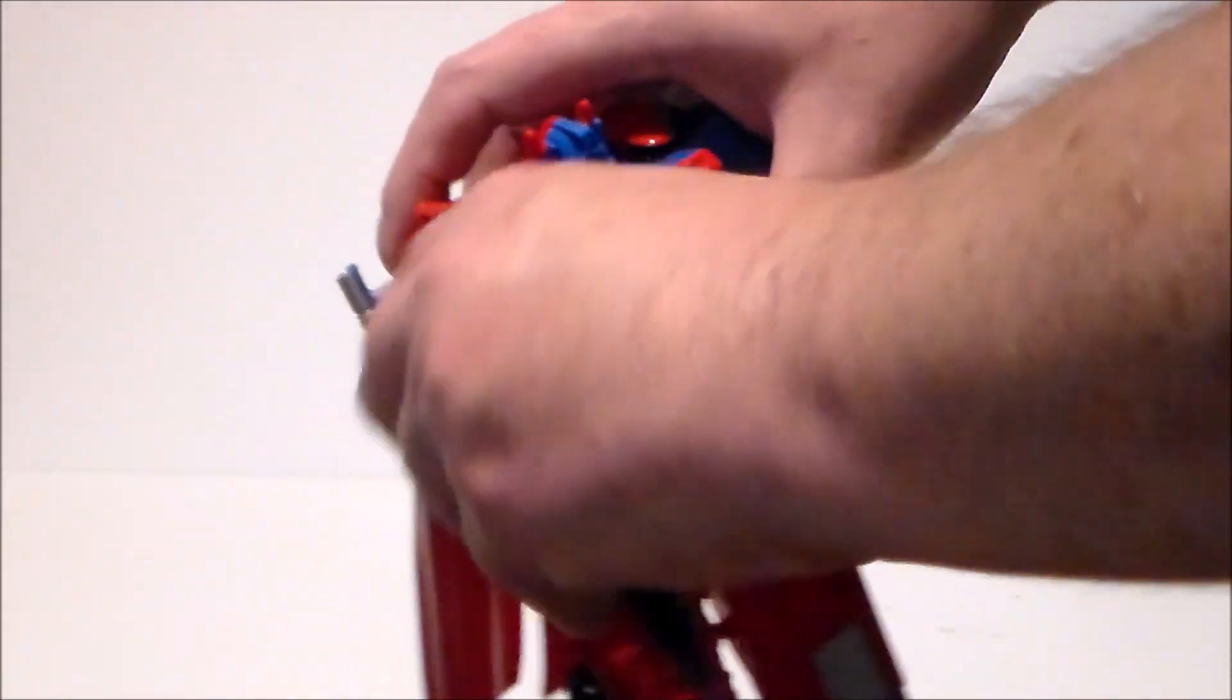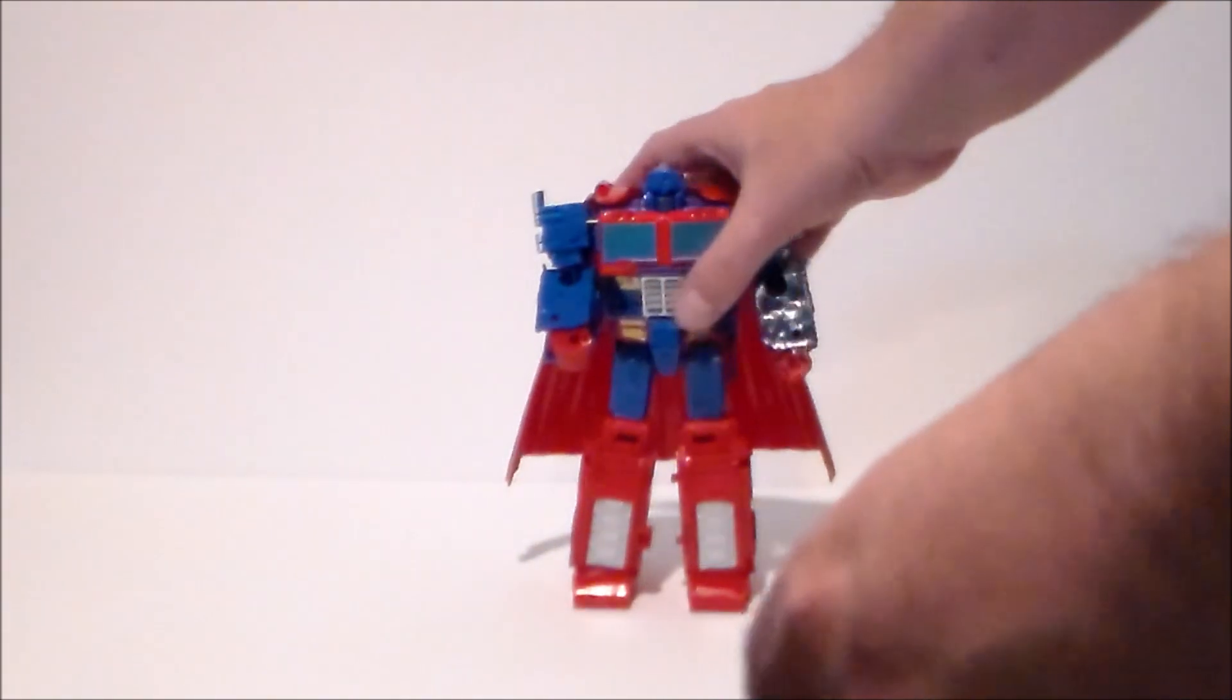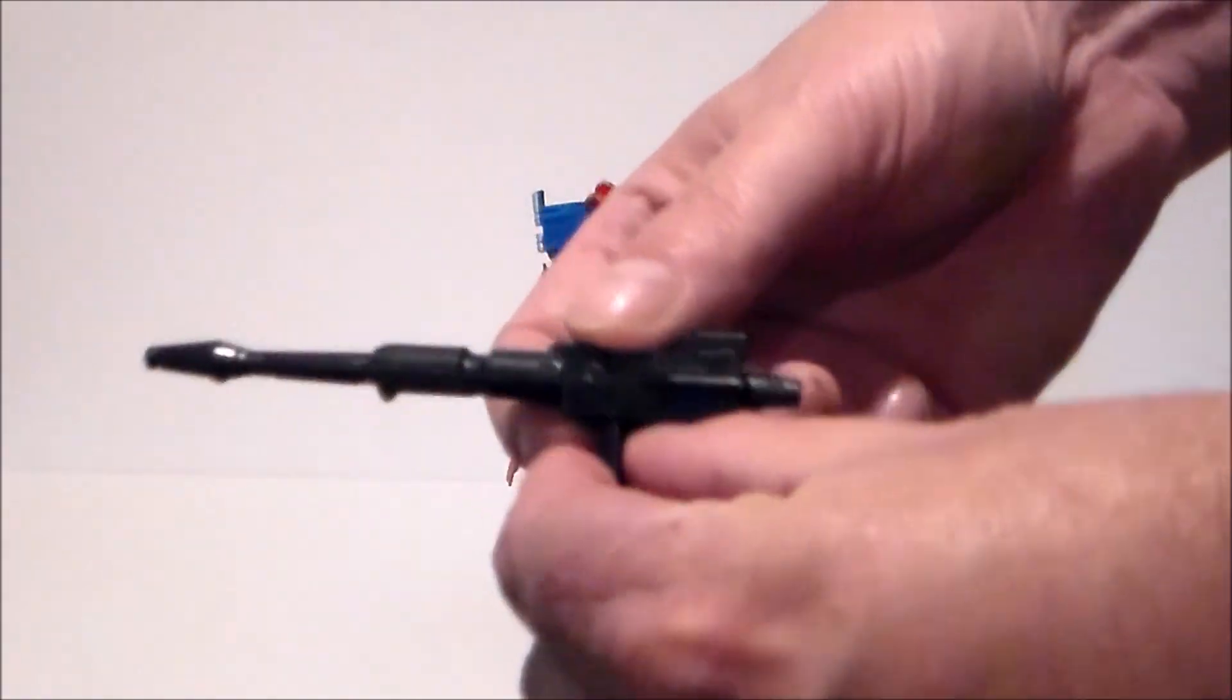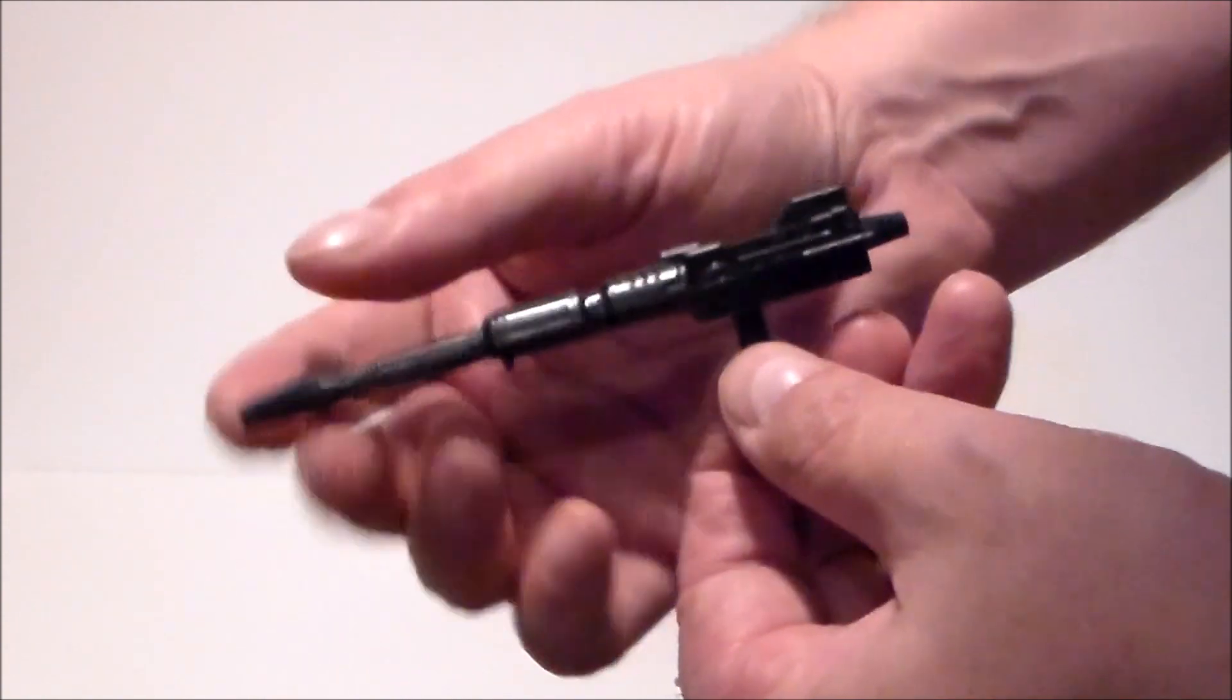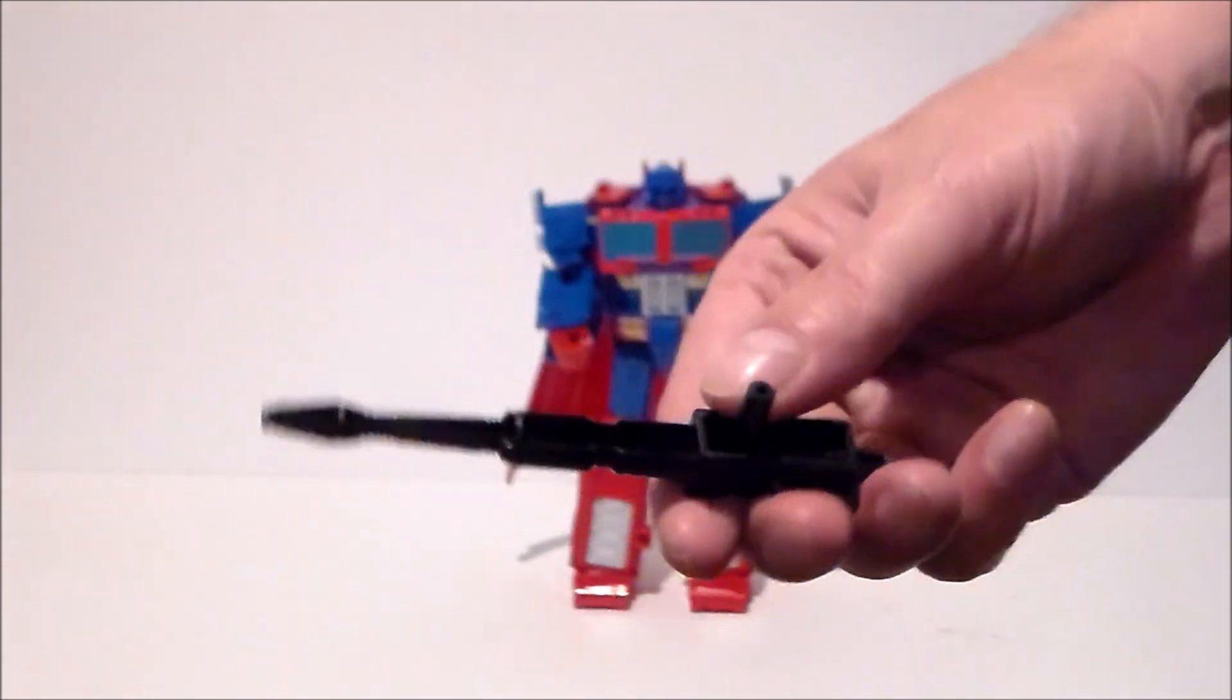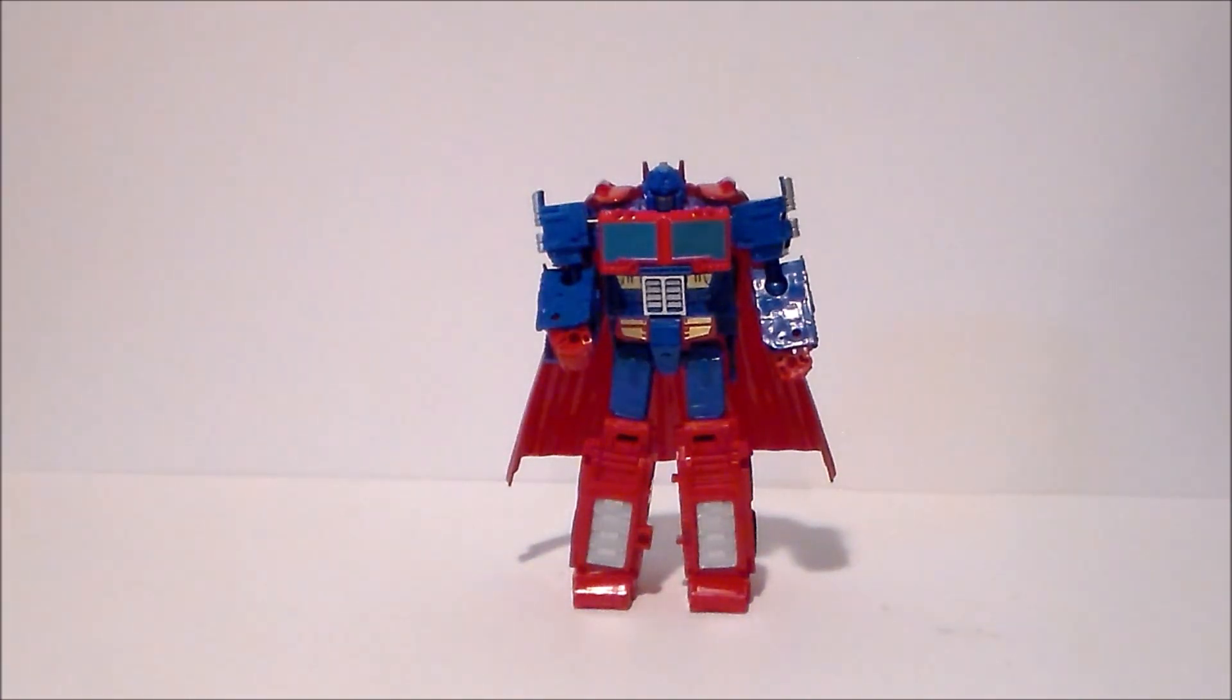He's got this little tiny blaster, very different for Optimus Prime, that's for sure. Just kind of take a closer look at that. Very elongated but pretty cool. It's a nice looking blaster, almost looks like Starscream's null ray, which is interesting.